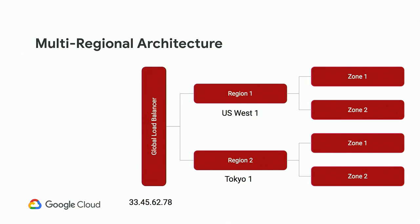We've got multiple regions, but we don't want to tell users in Tokyo to go to foo-tokyo.com and users in Europe to go to foo-europe.com. We want to send them all to foo.com. We need a way to give them a single endpoint that routes traffic to their nearest region. This is what a global load balancer does — it provides a single IP address and thus a single domain name, then looks at where the request is coming from and routes it to the closest location that is up and able to handle requests.